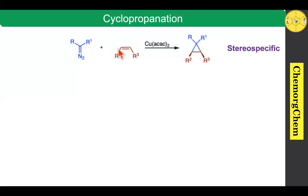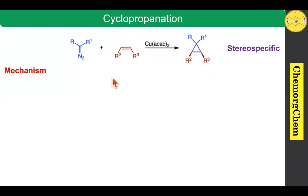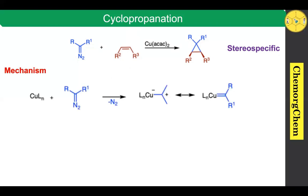That means when you take the cis alkene, the arrangement of R2 and R3 are both present in the cis orientation in the product, and when you take the trans alkene you will get the trans-oriented product. Before seeing the mechanism for the cyclopropanation reaction, we should know how to generate the copper carbene complex.